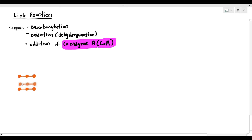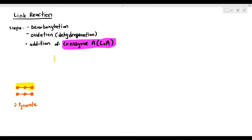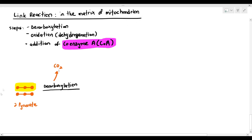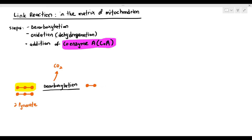Remember, at the end of glycolysis, you get two pyruvate molecules. I'm only going to focus on one pyruvate molecule first, which I've highlighted. The pyruvate molecule undergoes decarboxylation. Decarboxylation just means the removal of one carbon in the form of carbon dioxide. So look at the pyruvate molecule — it had three carbons earlier, and now it has only two carbons.